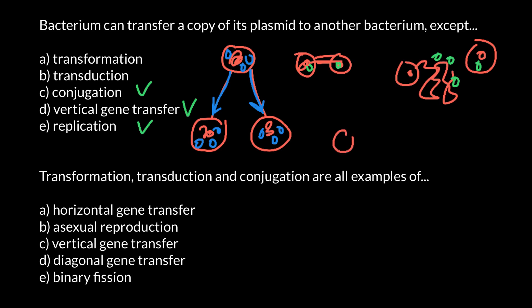Here is another example: transduction. We have two bacteria, and one bacterium can be infected by a bacteriophage. When bacteria are infected, many more bacteriophages are produced, and some of these may include some of the genetic material of the bacterium in the phage head. However, plasmids are too big to be incorporated into the head of bacteriophages, as plasmids can be around one hundred thousand base pairs.